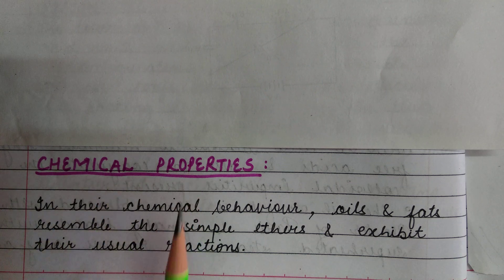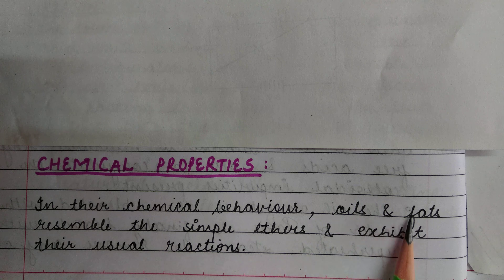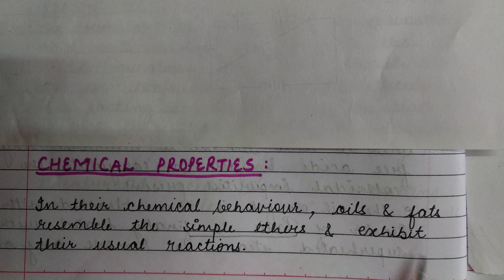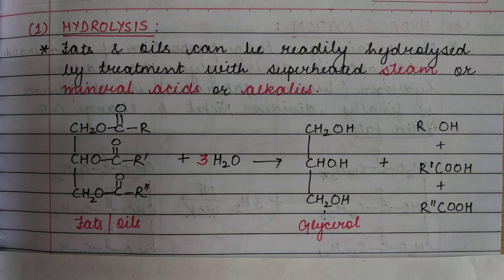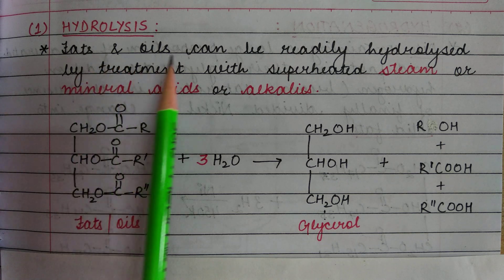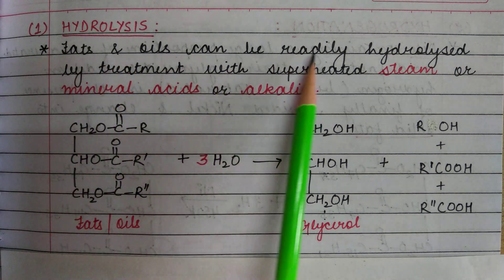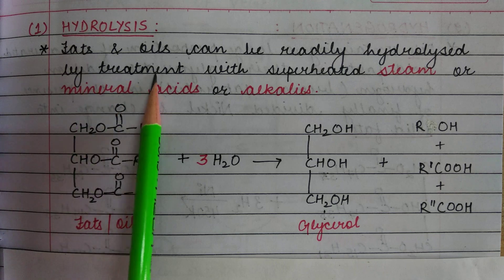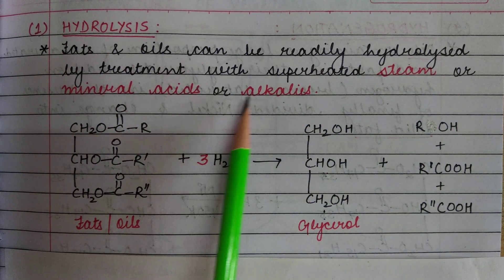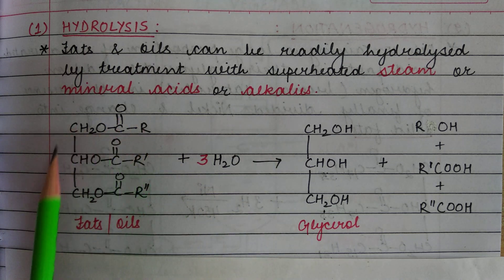Chemical properties. In their chemical behavior, oils and fats resemble the simple ethers and exhibit their usual reactions. The first chemical property is hydrolysis. Fats and oils can be readily hydrolyzed by treatment with superheated steam or mineral acids or alkalis.